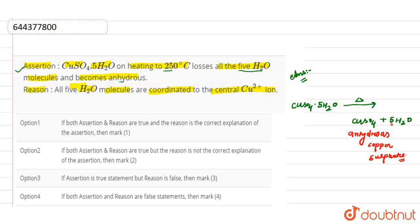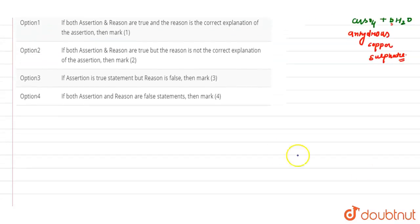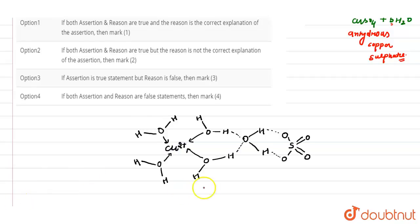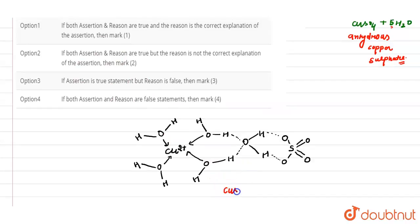Now if we talk about the reason — that all 5 water molecules are coordinated to the central copper 2+ ion — for this we need to see the structure of this compound. We have the structure here: Cu²⁺, the structure of CuSO₄·5H₂O.